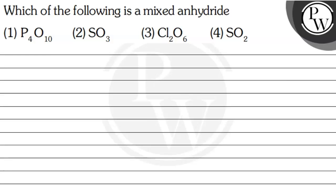Hello, let's read the question. The question says: which of the following is a mixed anhydride? The options are P4O10, SO3, Cl2O6, and number 4, SO2.